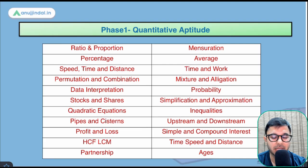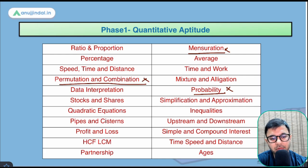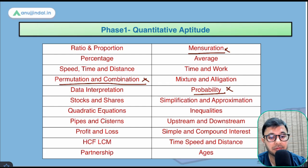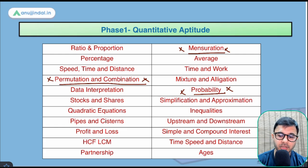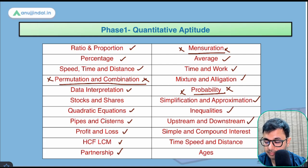For quantitative aptitude, the exhaustive topic list includes ratio and proportion, percentage, time-speed-distance, data interpretation, quadratic equations, pipes and cisterns, profit and loss, LCM/HCF, partnership, averages, time and work, mixture and allegation, simplification, inequalities, simple and compound interest, ages, mensuration, and probability/permutation-combination. You may choose to skip topics that have rarely been asked, but be aware that even less common topics like probability may occasionally appear.